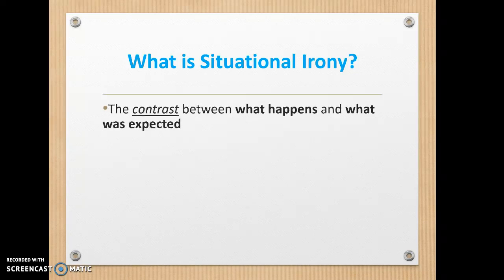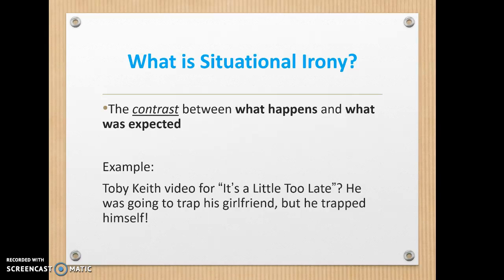And then there's situational irony: a contrast between what happens and what was expected to happen. There's a Toby Keith video called 'It's a Little Too Late' — it's a spoof off Edgar Allan Poe's short story 'Cask of Amontillado.' Basically he's trying to wall up his girlfriend because he's mad at her, but in the end we find out he traps himself rather than actually walling her up. You could YouTube that if you have time. And if you know 'Cask of Amontillado,' you'll catch the allusion.